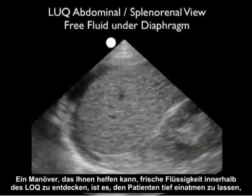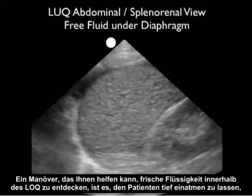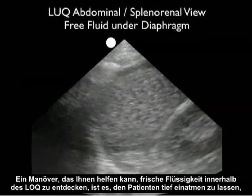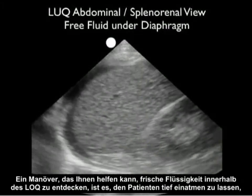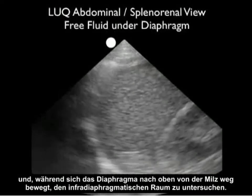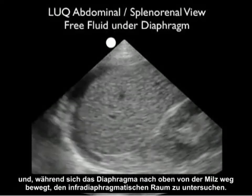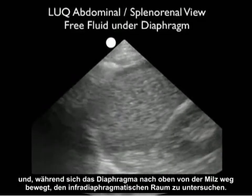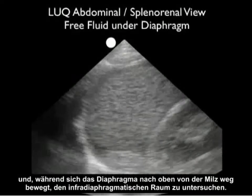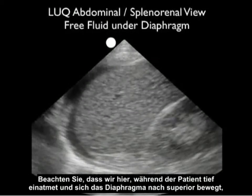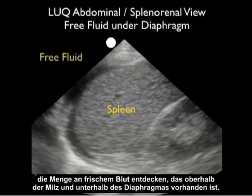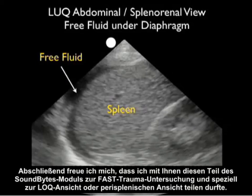One maneuver that can help you uncover fresh fluid within the left upper quadrant is to have the patient take a deep breath and analyze that infradiaphragmatic space as the diaphragm moves upward off of the spleen. Notice here that we uncover the amount of fresh fluid present right above the spleen and below the diaphragm as the patient takes a deep breath and the diaphragm moves superiorly.